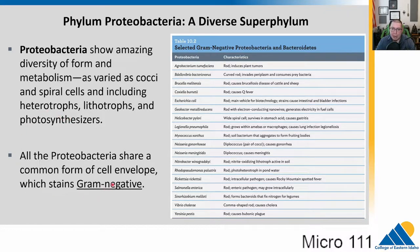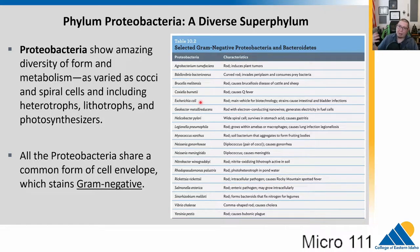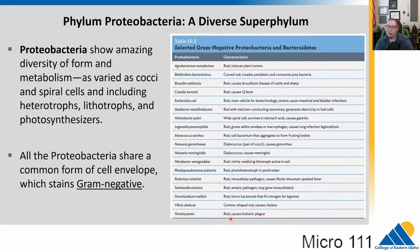These are all gram-negative staining and have that unique cell wall structure. Some ones we've talked about: Agrobacterium tumefaciens can cause tumors in plants but is also very useful for transforming DNA into plants. Coxiella burnetii causes Q fever. Escherichia coli — pathogenic strains can cause infections and be very deadly, but it's also our main research organism. Helicobacter pylori can cause stomach ulcers. Neisseria gonorrhea causes the sexually transmitted disease gonorrhea. Vibrio cholerae — we talked a lot about cholera earlier in the course. And Yersinia pestis, which causes the bubonic plague.